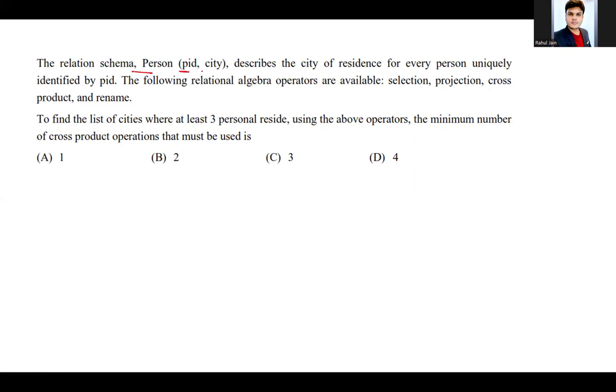The relation schema Person (pid, city) describes the city of residence for every person uniquely identified by person ID. The following relational algebra operators are available: selection, projection, cross product, and rename.